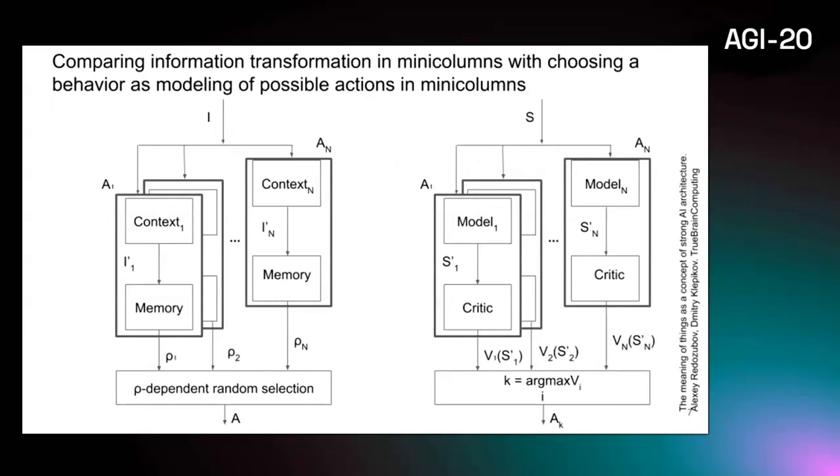To understand what action to choose, show all possible actions to see at which one the value of the world will be highest. This is exactly what the cortex does in our model. For example, each action of the motor cortex zone has its own context. Each context can calculate how the current world will change after action is performed. The result is evaluated based on memory. The action that leads to the better world is chosen.